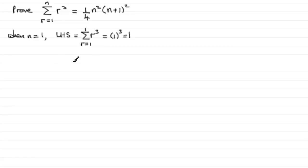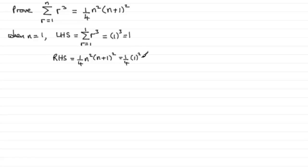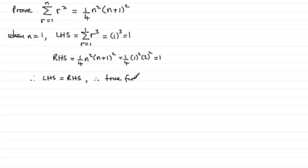Now check out the right hand side of the equation. The RHS equals a quarter n squared times n plus 1 squared. Substituting n equals 1 gives us a quarter times 1 squared times 1 plus 1, which is 2, squared. And you can see that this comes to 1. So the left hand side is equal to the right hand side, and therefore this is true when n equals 1.